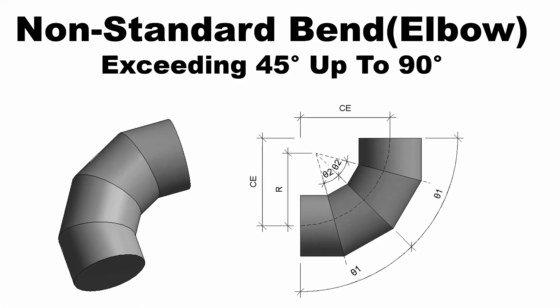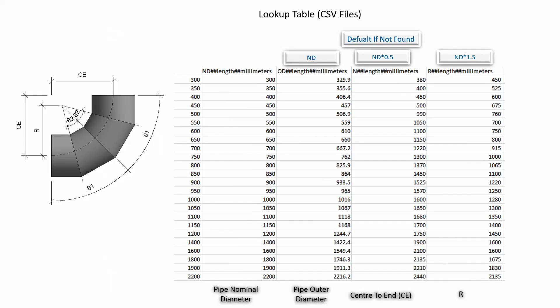Hello everyone. Today I would like to show you how to create a non-standard bend exceeding 45 degrees up to 90 degrees elbow Revit family. I will refer those dimensions in the picture to create the parameters. This is a lookup table CSV file. Its data are referred from the manufacturer specifications. I will use this lookup table CSV file to create the parametric family.